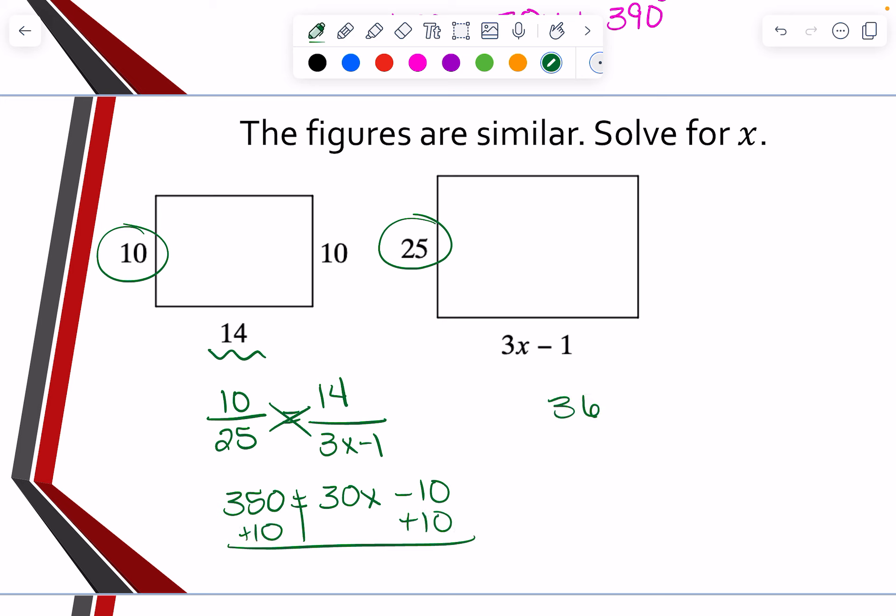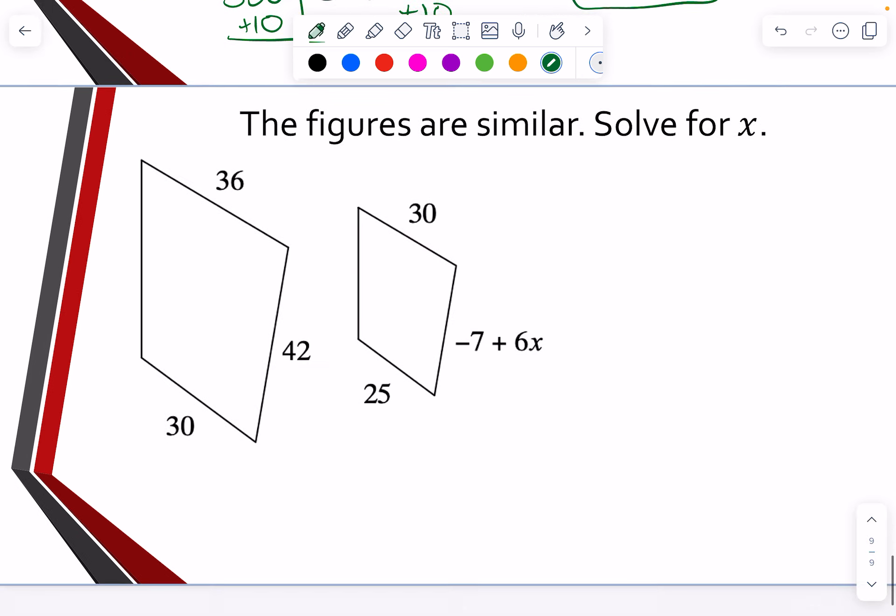We're going to add our 10 to both sides. So now we have 360 equals, 360 is equal to 30X. I'm going to divide by 30. And that's going to give me actually 12 is equal to X.